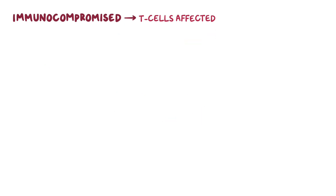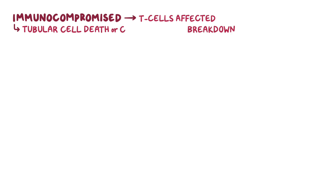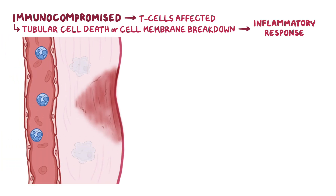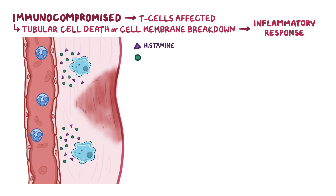In immunocompromised individuals, T cells are affected, and without them, the BK virus in the epithelial cells starts multiplying once again, which results in tubular cell death by lysis, or the breakdown of the cell membrane, releasing the virus into the interstitial tissue. This elicits an inflammatory response from the host. Namely, white blood cells like macrophages found in the affected tissue release inflammatory mediators like histamine and cytokines.